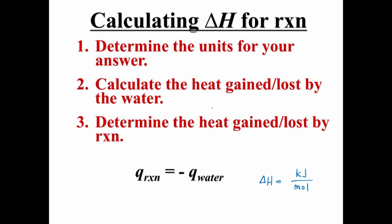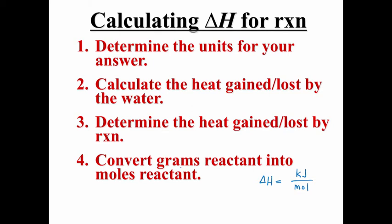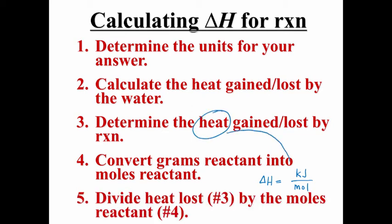The assumption in calorimetry is that whatever heat was lost by the reaction will equal the heat that was gained by the water. In other words, all the heat from the reaction is now in the water. The only difference is that if the reaction loses heat, then the water gains heat. In the next step, we'll convert the grams of reactant into moles of reactant, since we're looking for kilojoules per mole. In the final step, we divide the heat for the reaction from step 3 by the moles of reactant in step 4. This gives us an answer in kilojoules per mole.